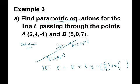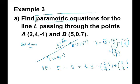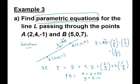The direction vector is vector AB = B − A = (5, 0, 7) − (2, 4, −1) = (3, −4, 8). Substituting into the formula gives R = (2, 4, −1) + t(3, −4, 8). The parametric equations are: x = 2 + 3t, y = 4 − 4t, and z = −1 + 8t. This is the parametric equation for the line.